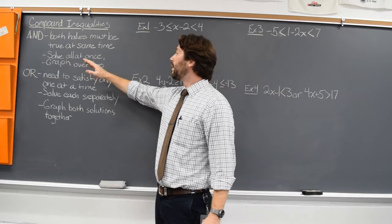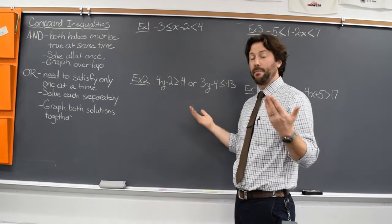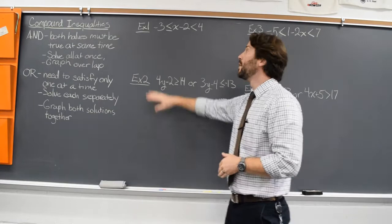The or inequalities. With an or inequality, this has to be true, or this has to be true. So we just solve each half separately, and we graph both halves — both solutions — on the same number line, and that's our solution set.